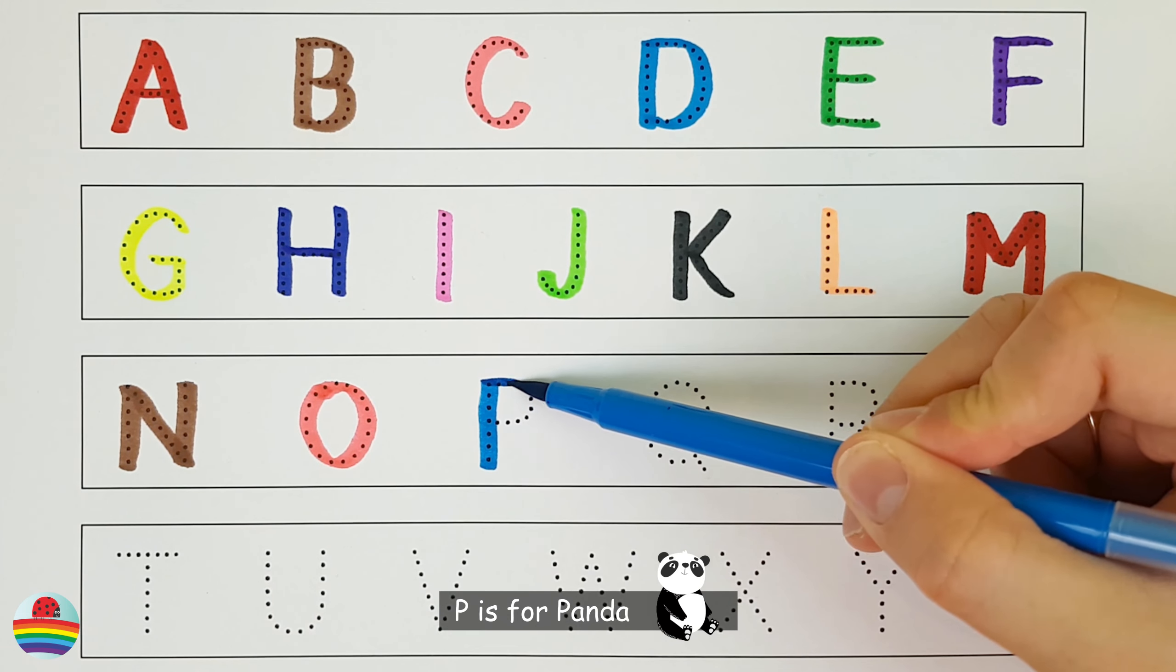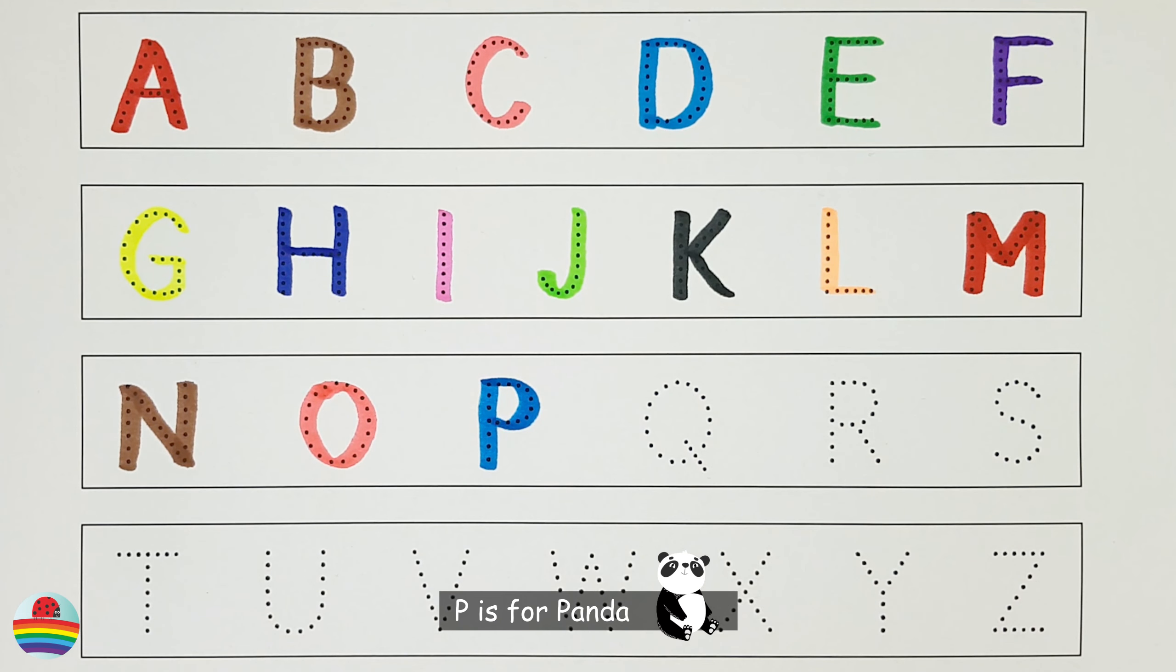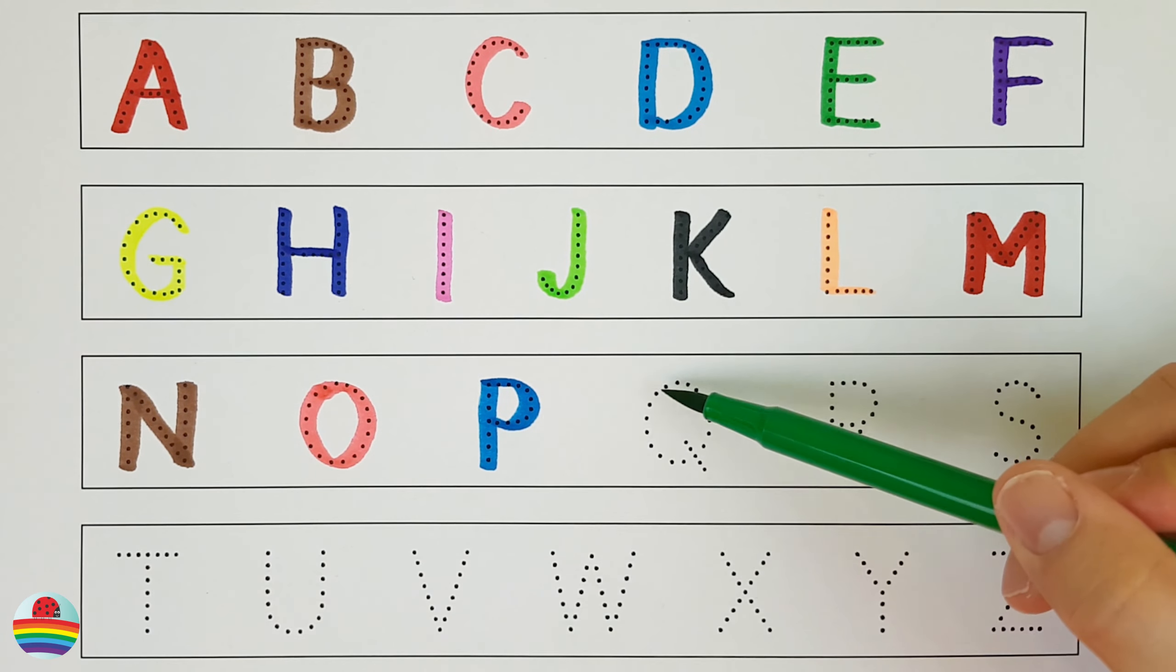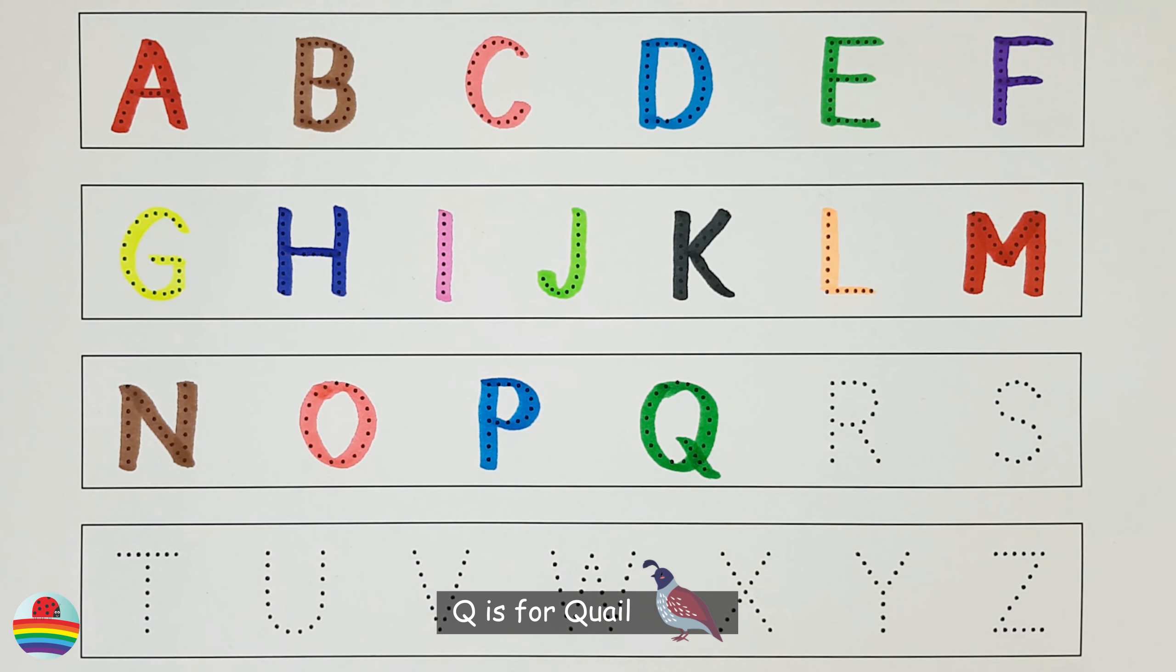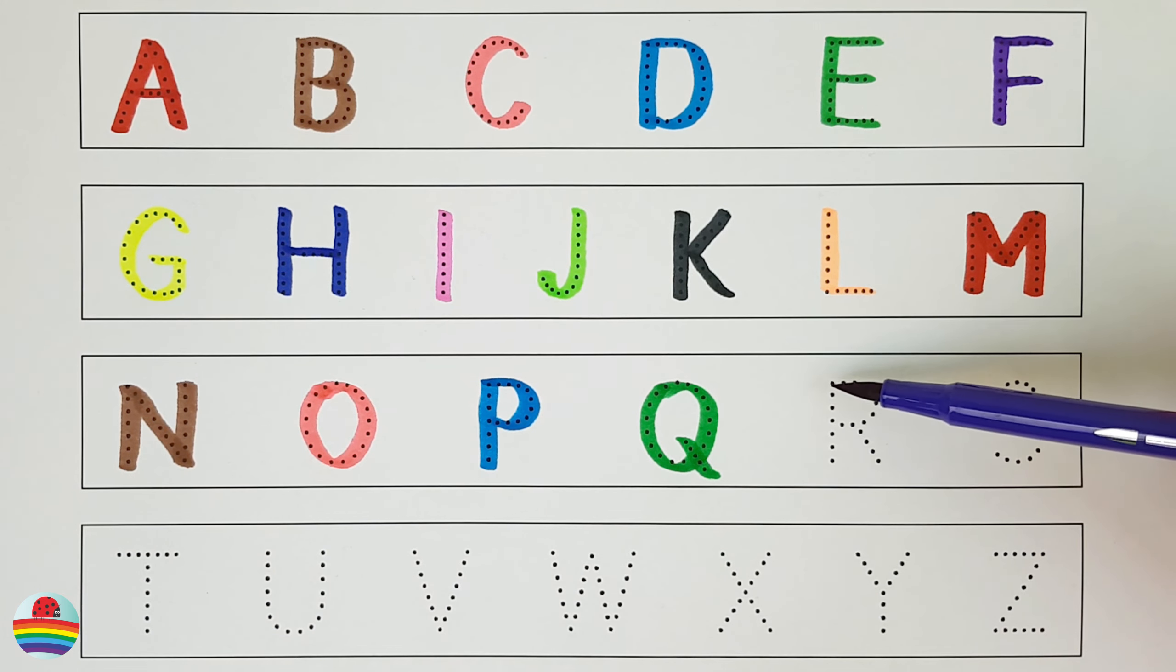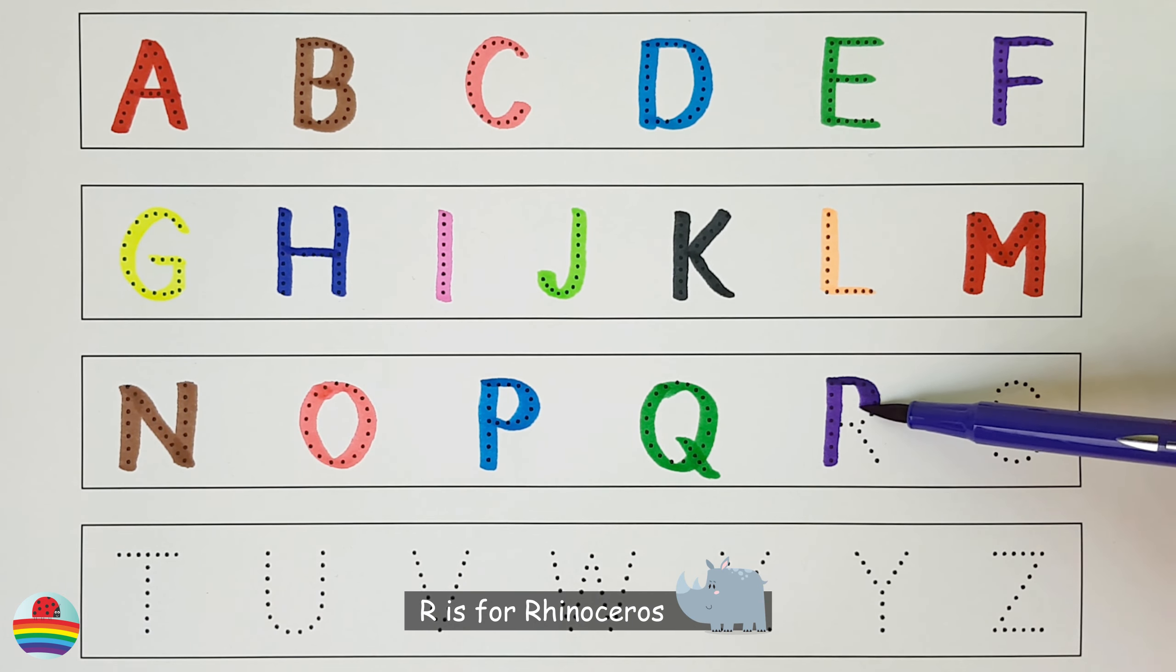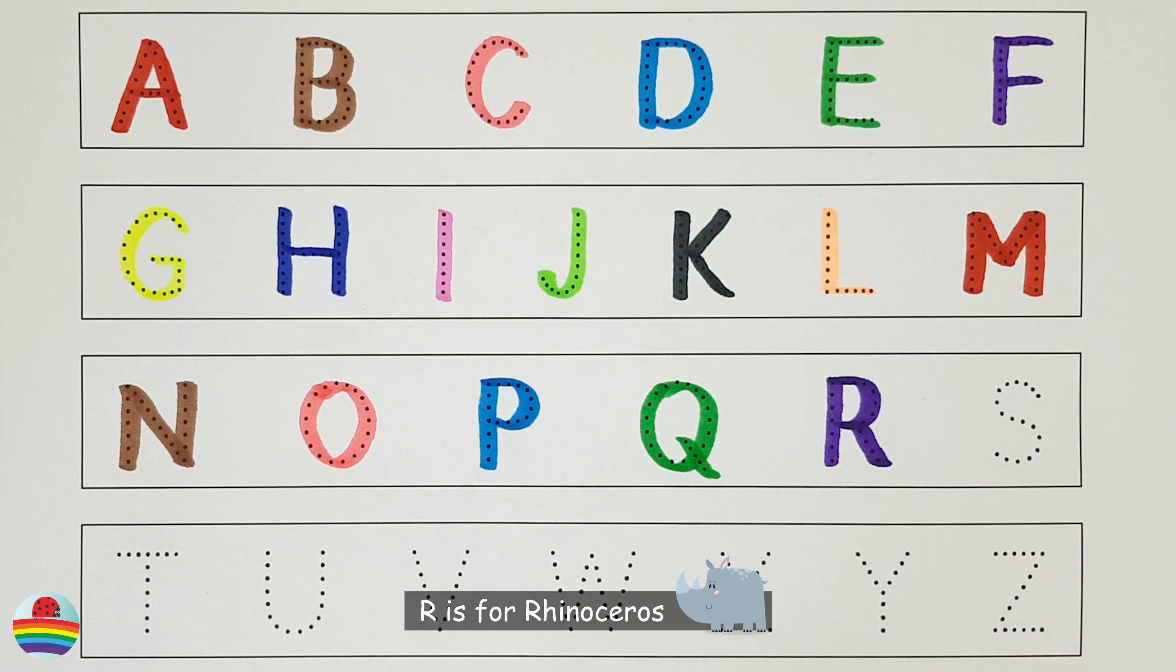P. P is for Panda. P. Q. Q is for Quail. Q. R. R is for Rhinoceros. R.